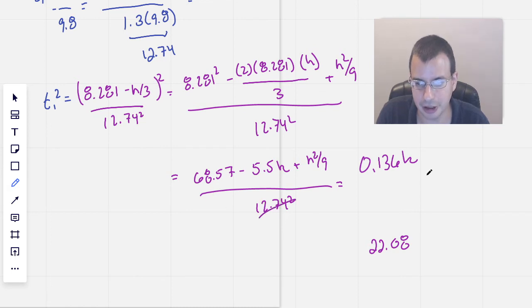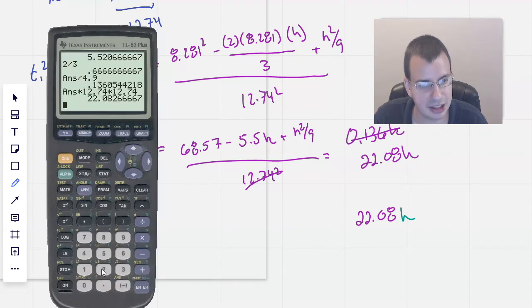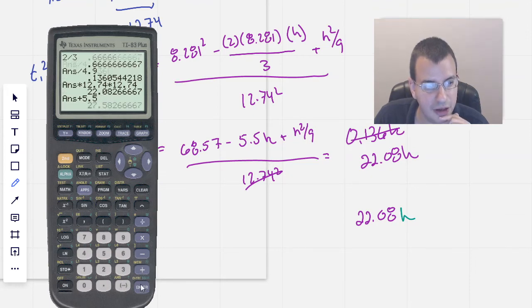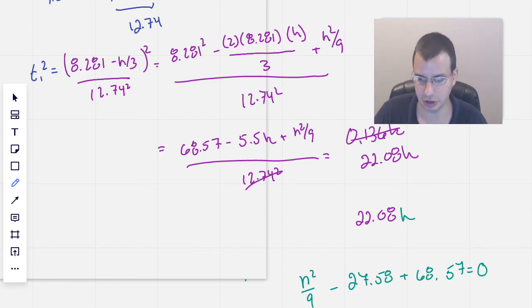22.008, and that equals this top part here. I know this is terrible penmanship. So then, this is going to be H here, so if we add to that 5.5, we get 27.58. So we have H squared over 9 minus 27.58 plus 68.57 equals 0. Oh, this is supposed to be H.